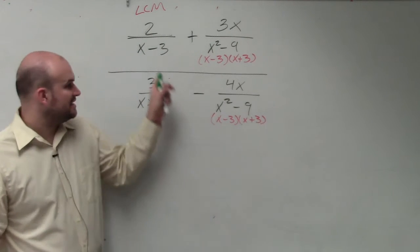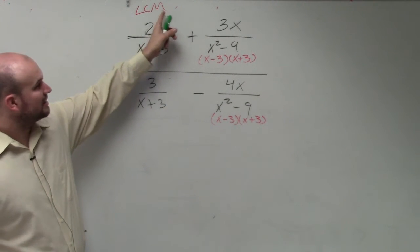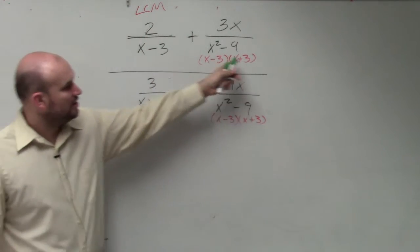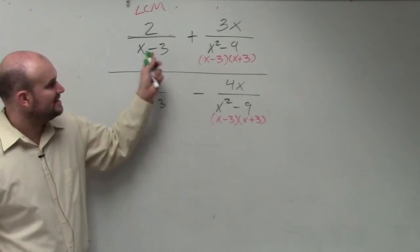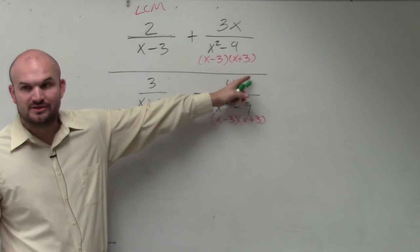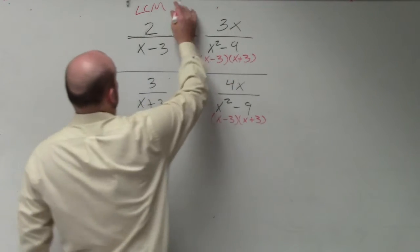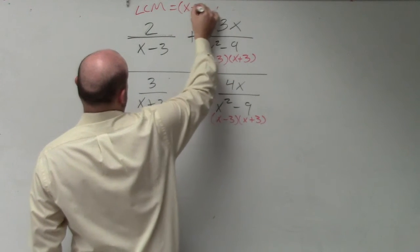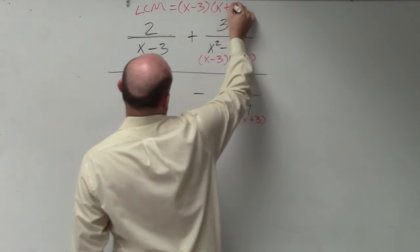So if you guys look at this, the common factor or the common multiple for all of these has to contain at least an x minus 3 and an x plus 3. Does everybody agree with me? So my common multiple is x minus 3 times x plus 3.